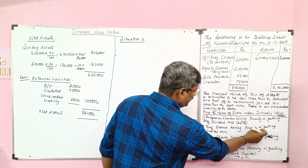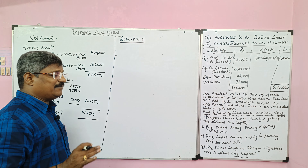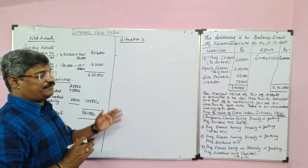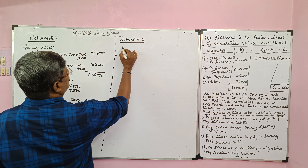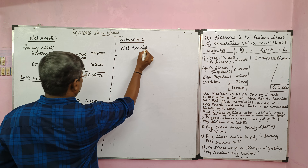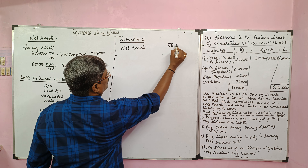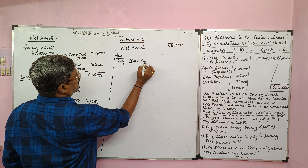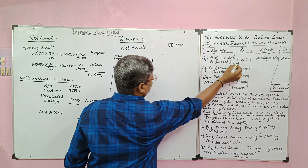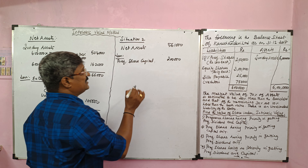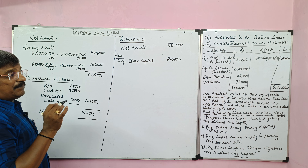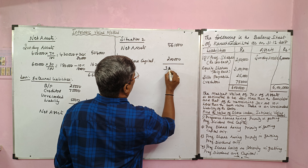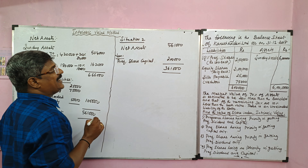Situation 2: preference shares having priority in getting capital only. So no preference dividend is payable at the time of valuation of shares. Take net assets already calculated: 5,61,000. We deduct only the preference share capital of 2,00,000. No preference dividend is deductible because preference shares have priority in getting capital only. So the balance of net assets available for equity shares is 3,61,000.